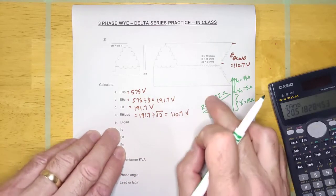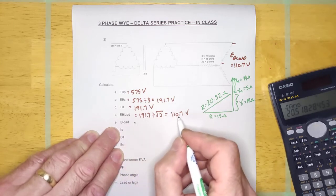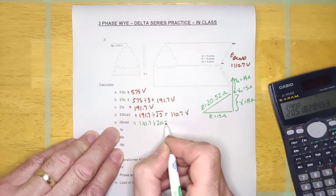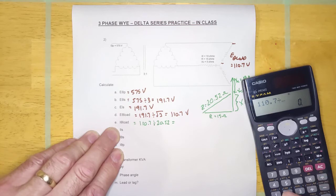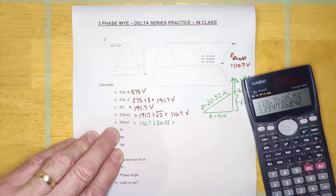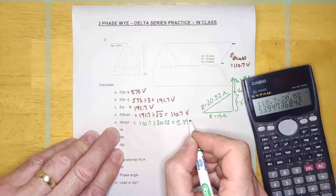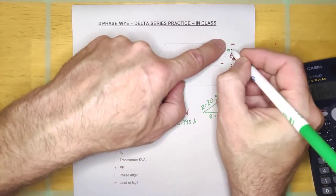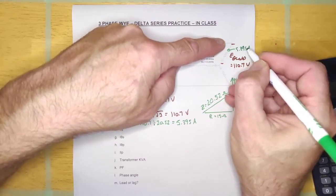And the reason we're going to calculate that is so I can calculate I phase load because I is going to be E over Z, right? And it's going to be that voltage right there. 110.7 divided by 20.52. All right guys. See how easy this is? 110.7 divided by 20.52 equals 5.395 amps. And that current would be, if I clamped on right there, 5.395 amps. That's a nine.